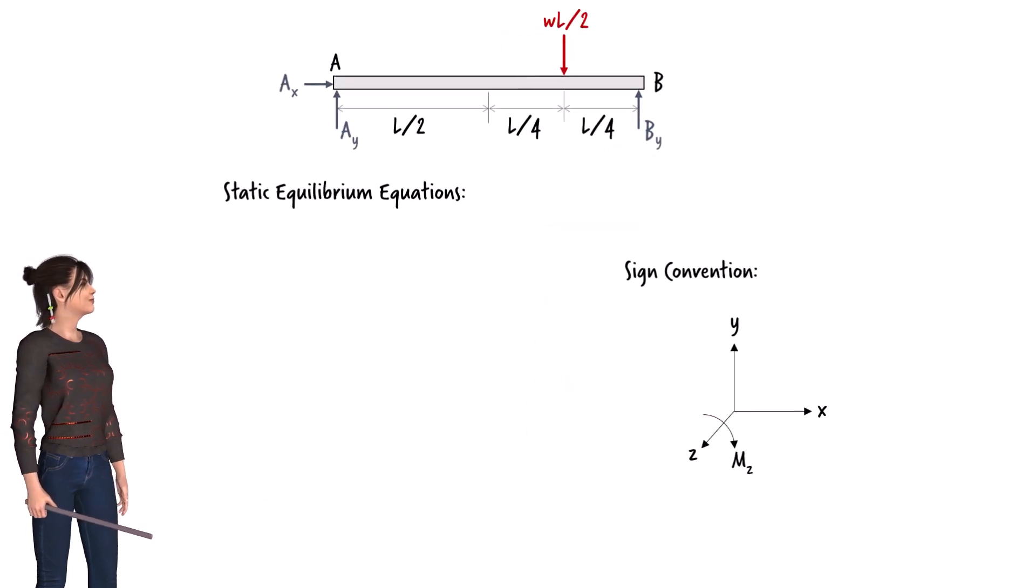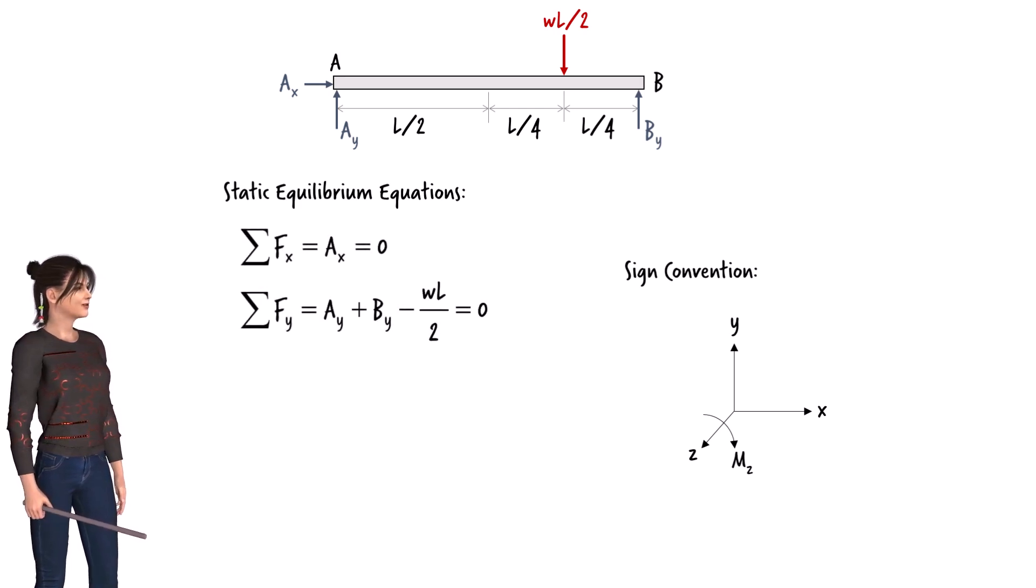We can write the equilibrium equations now that we have constructed the beam's free body diagram. Summing the forces in the x and y directions, and the sum of the moments at end B must be 0.